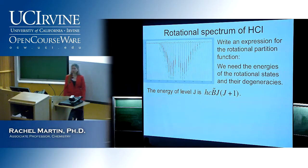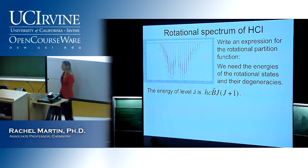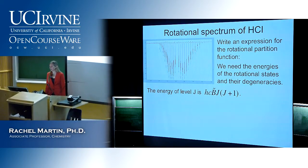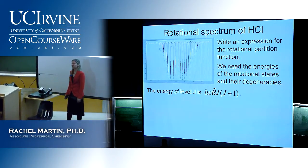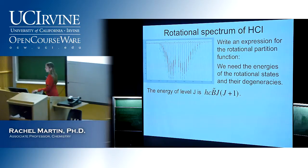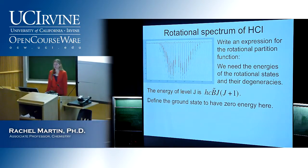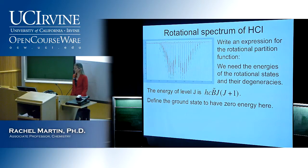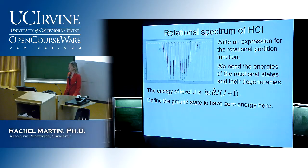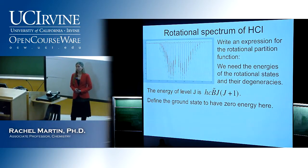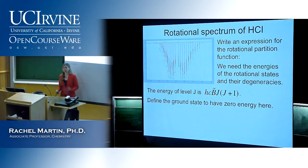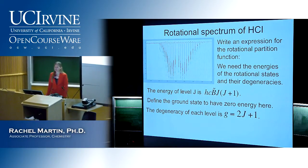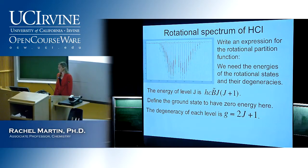We need the energies of all the rotational states and their degeneracies. The energy of some level J is hcB times J(J+1). We want to define the ground state to have zero energy just because it makes the math easier. We also know that the degeneracy of each level is 2J+1.